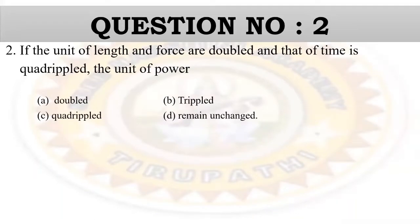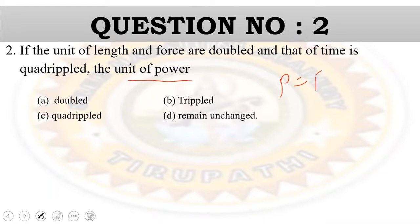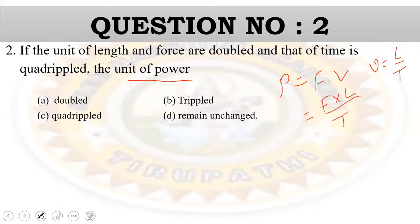Second question: the unit of length and force are doubled. At that time, time is quadrupled. What is the unit of power? The power formula is: power equals force into velocity, which can be written as force into length by time. According to the given data, F' equals 2F and L' equals 2L.